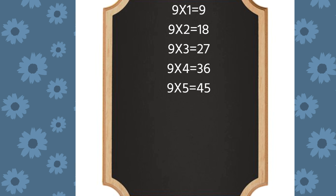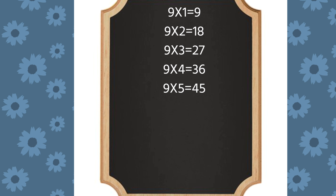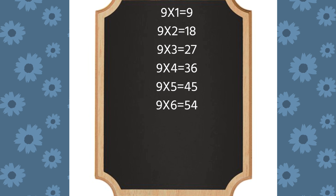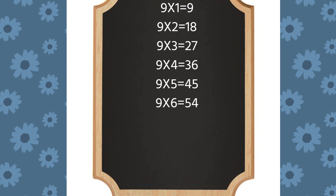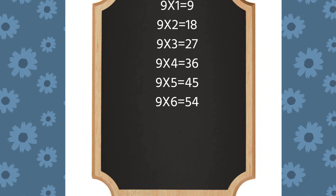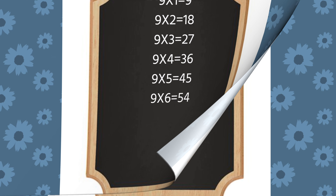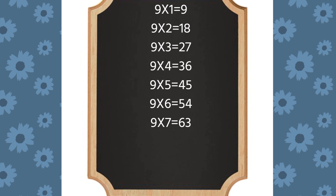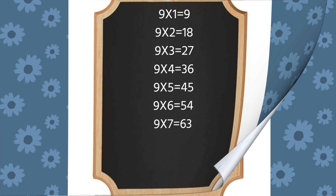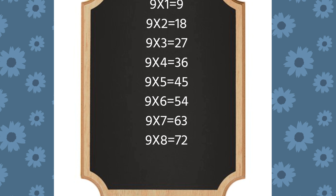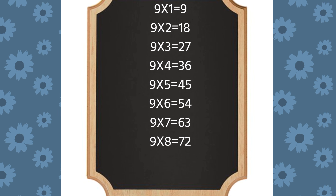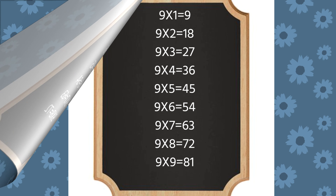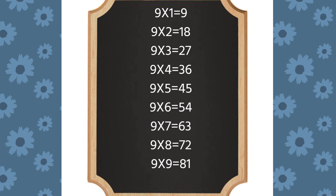Nine fives are forty-five. Nine sixes are fifty-four. Nine sevens are sixty-three. Nine eights are seventy-two. Nine nines are eighty-one.